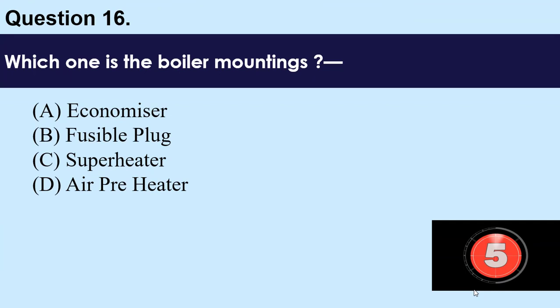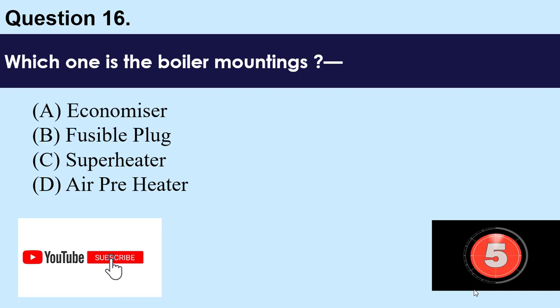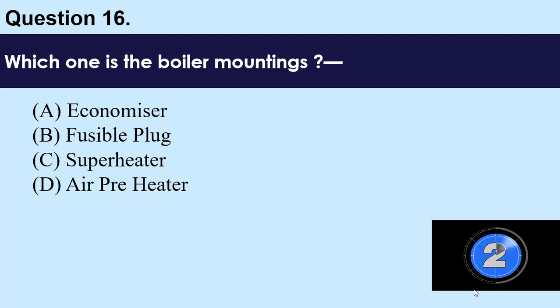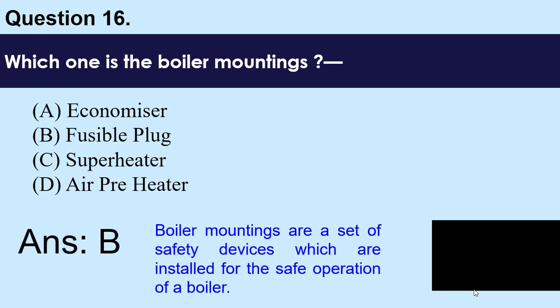Question number 16: Which one of the following is a boiler mounting? A) Economizer, B) Fusible plug, C) Superheater, D) Air preheater. The answer is B — fusible plug. Boiler mountings are a set of safety devices installed for the safe operation of a boiler, and the fusible plug is a safety device.